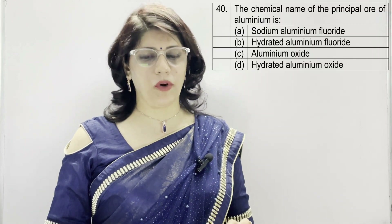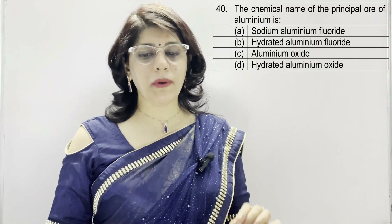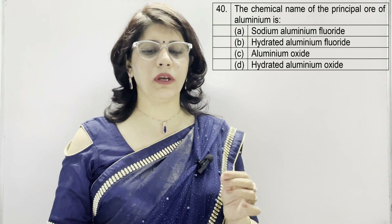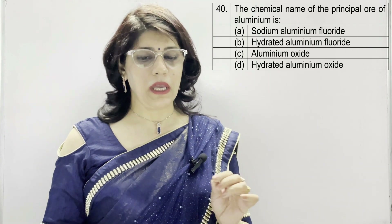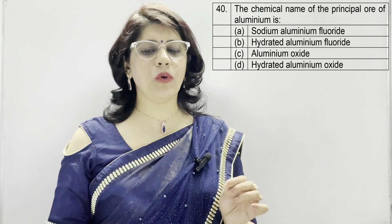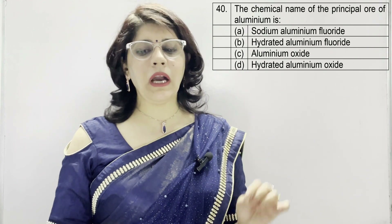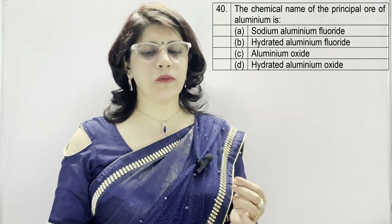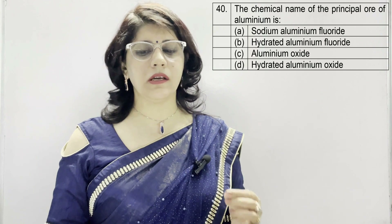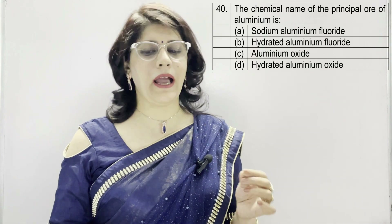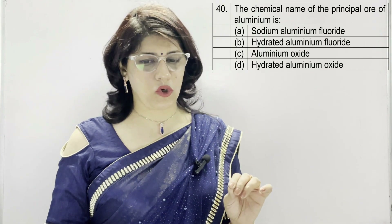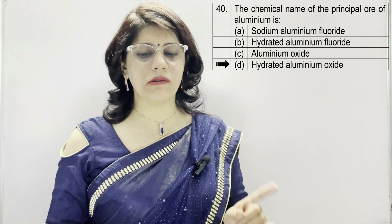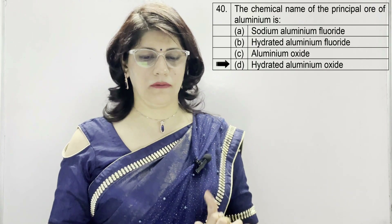In question number 40: the chemical name of the principal ore of aluminium is — A: sodium aluminium fluoride, B: hydrated aluminium fluoride, C: aluminium oxide, D: hydrated aluminium oxide. The correct option is D — hydrated aluminium oxide.